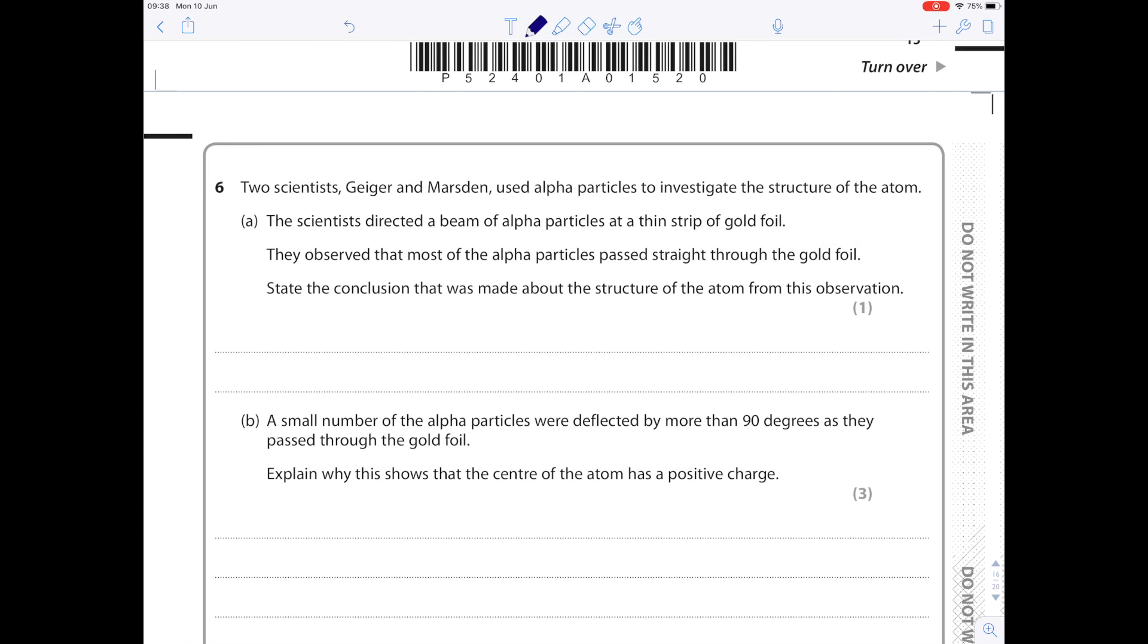Two scientists, Geiger and Marsden, used alpha particles to investigate the structure of an atom. The scientists directed a beam of alpha particles at a thin strip of gold foil. They observed that most of the alpha particles passed straight through the gold foil. State the conclusion that was made about the structure of the atom from this observation. That is that an atom must be largely empty space, because if they're passing straight through, it's because they're not coming anywhere near the nucleus, which is positively charged. As alpha particles are also positively charged, they would repel.